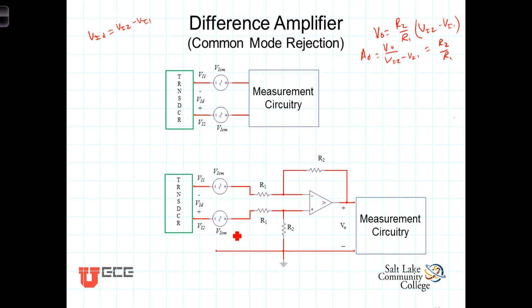We've previously demonstrated that the output of the difference amplifier, Vout, is equal to R2 over R1, the difference gain, times the voltage here minus the voltage there. Well, the voltage here is Vi2 plus the noise voltage plus ViCM.